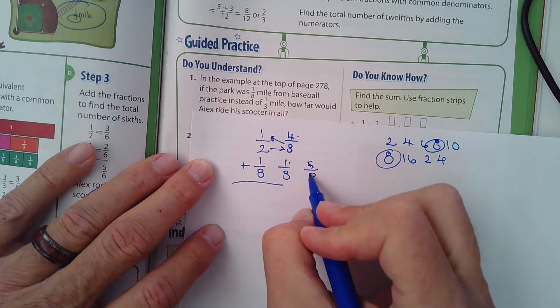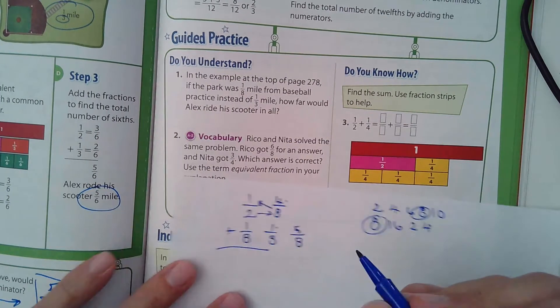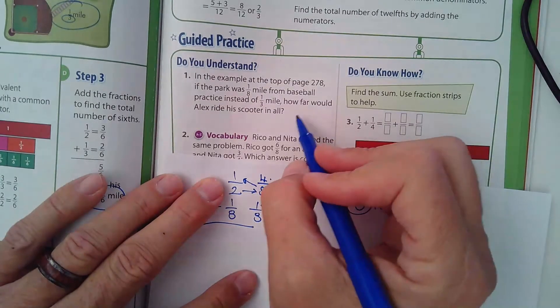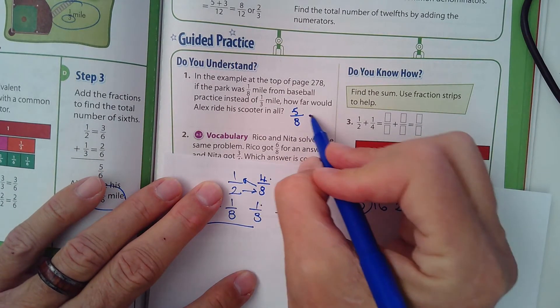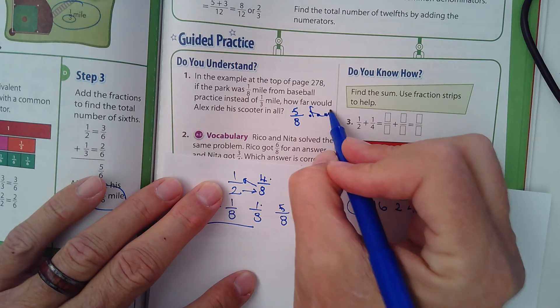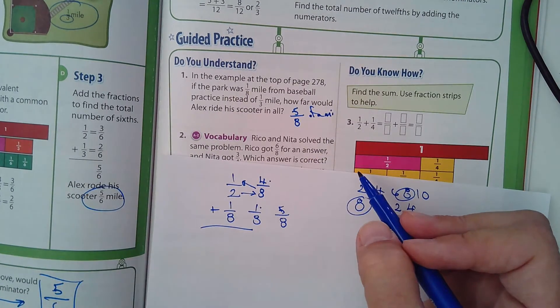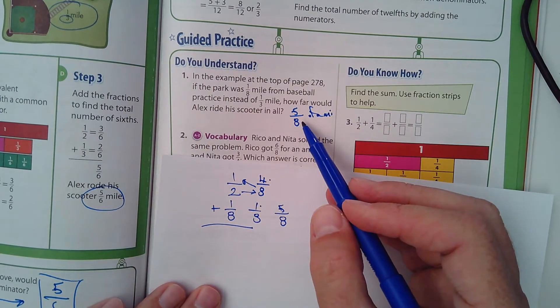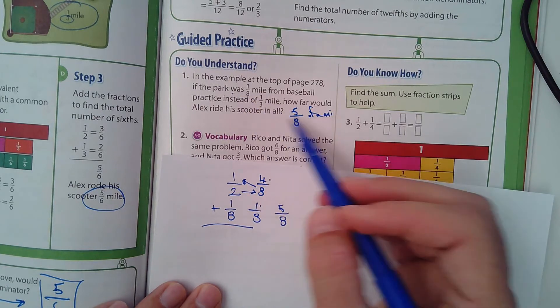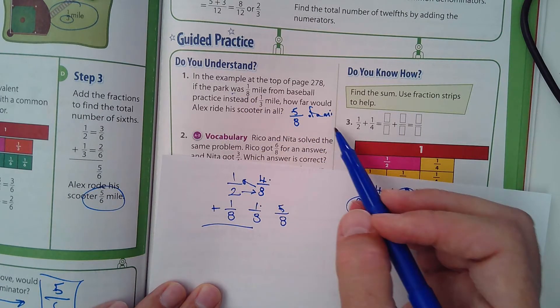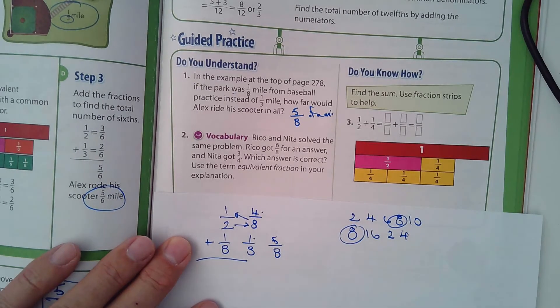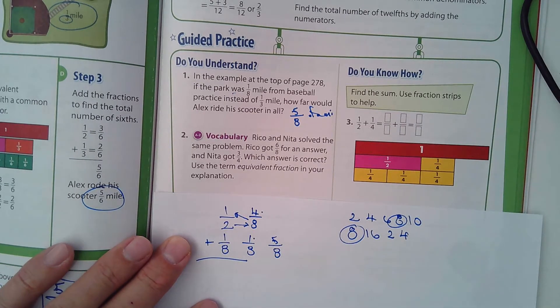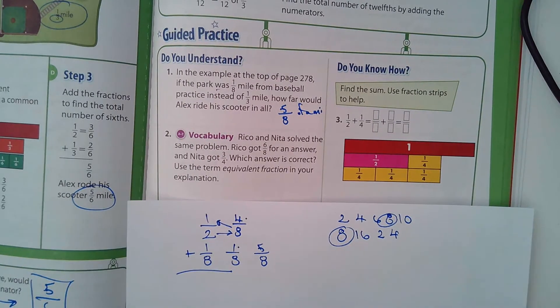Now we add them up. How do we do that? We add the numerators. What's on top? One plus 4 is 5. The answer is five-eighths. So I'm going to come down here: five-eighths of a mile.